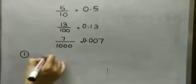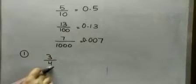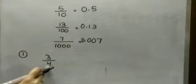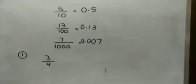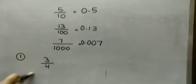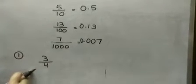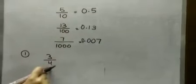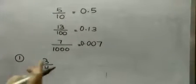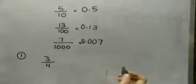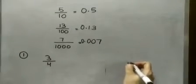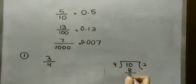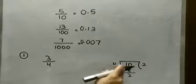Now if I take the example 3 by 4, the denominator is not a power of 10. But if I change 4 into a power of 10, I can easily convert this rational number into decimal form. To convert 4 into a power of 10 — either 10, 100, or 1000 — we have to multiply 4 by some number. Let's divide: 4 into 8 leaves a remainder, so 4 cannot be converted into 10.